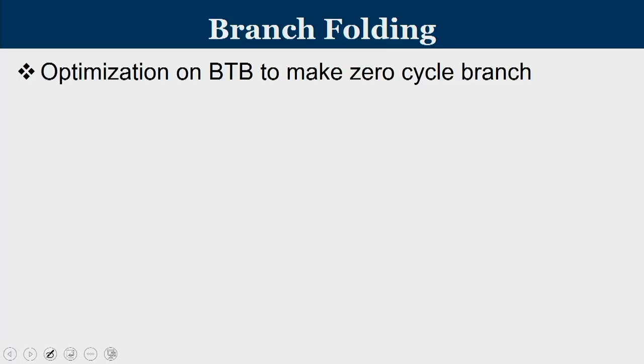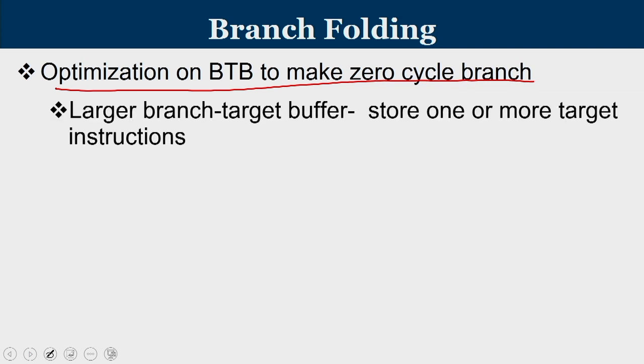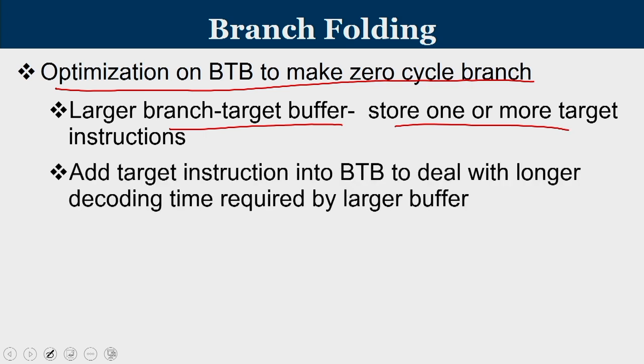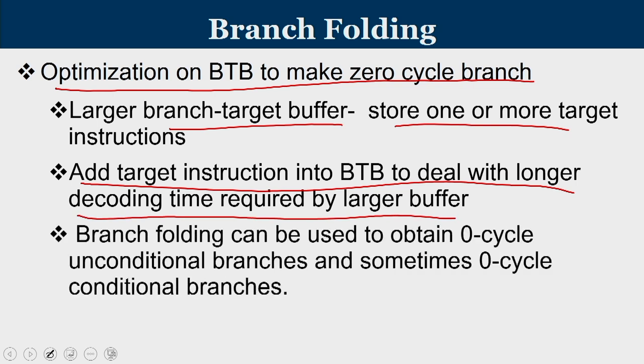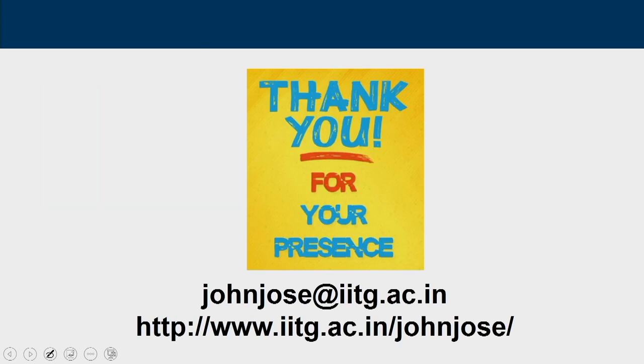There is a tutorial accompanying this week where a problem is worked out showing how to approach dynamic branch prediction and how table entries are manipulated. The optimization on branch target buffer is to achieve a zero-cycle branch: with a large branch target buffer, store one or more target instructions rather than just the target PC. Branch folding can be used to obtain zero-cycle unconditional branches and sometimes zero-cycle conditional branches as well. With this we come to the end of this lecture. We covered what control hazard is, the different approaches to handling it, and specifically how a branch predictor works. Thank you.